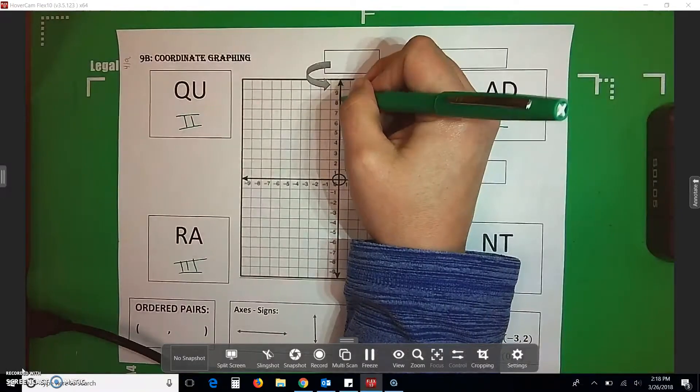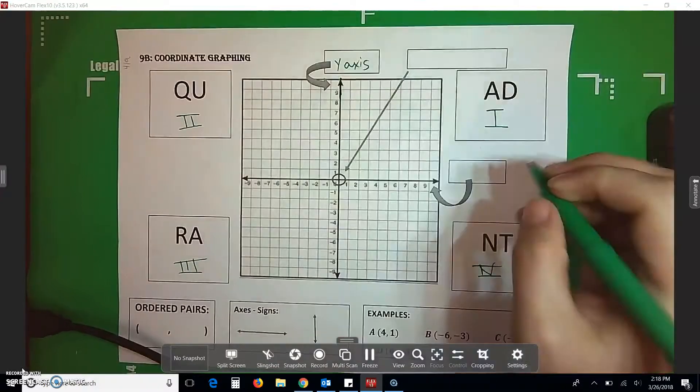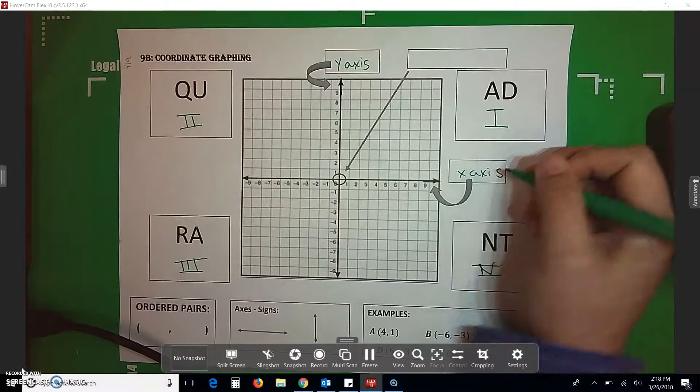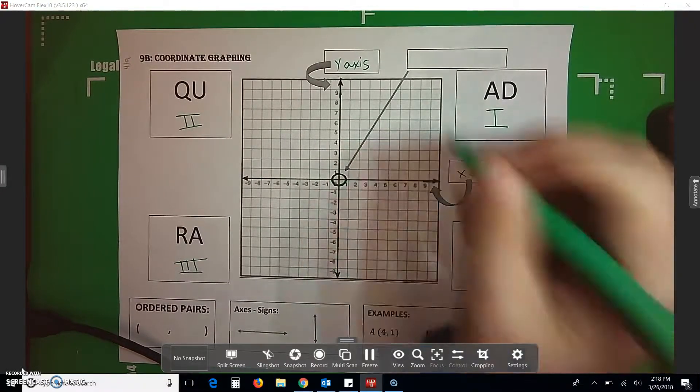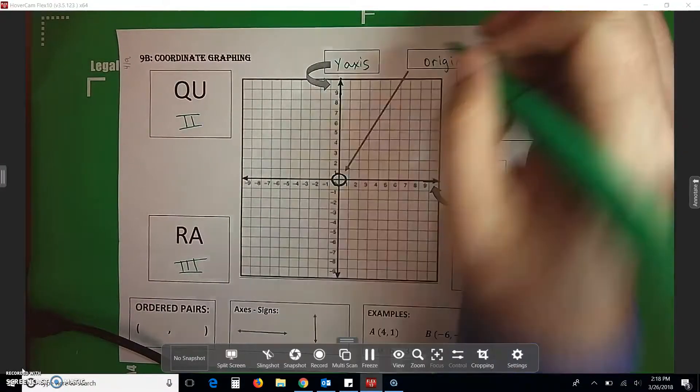Second thing, this line here is your y-axis. And this line here is your x-axis. And this little circle right here where we have the crosshairs, that's going to be your origin.